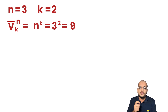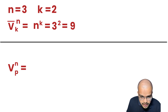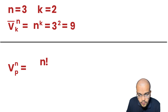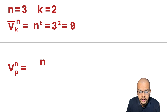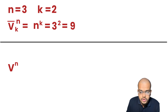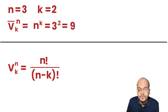Now let us consider that there is no repetition at all. The formula to find out the variation without any repetition is Vⁿₖ = n factorial divided by (n minus k) factorial.